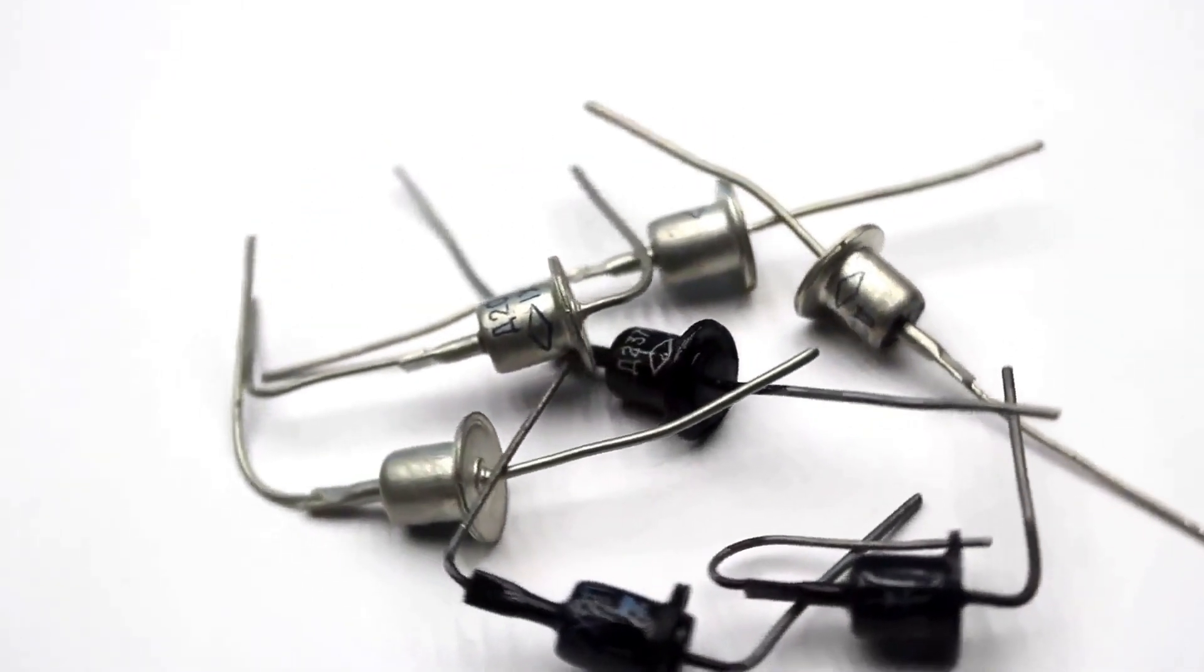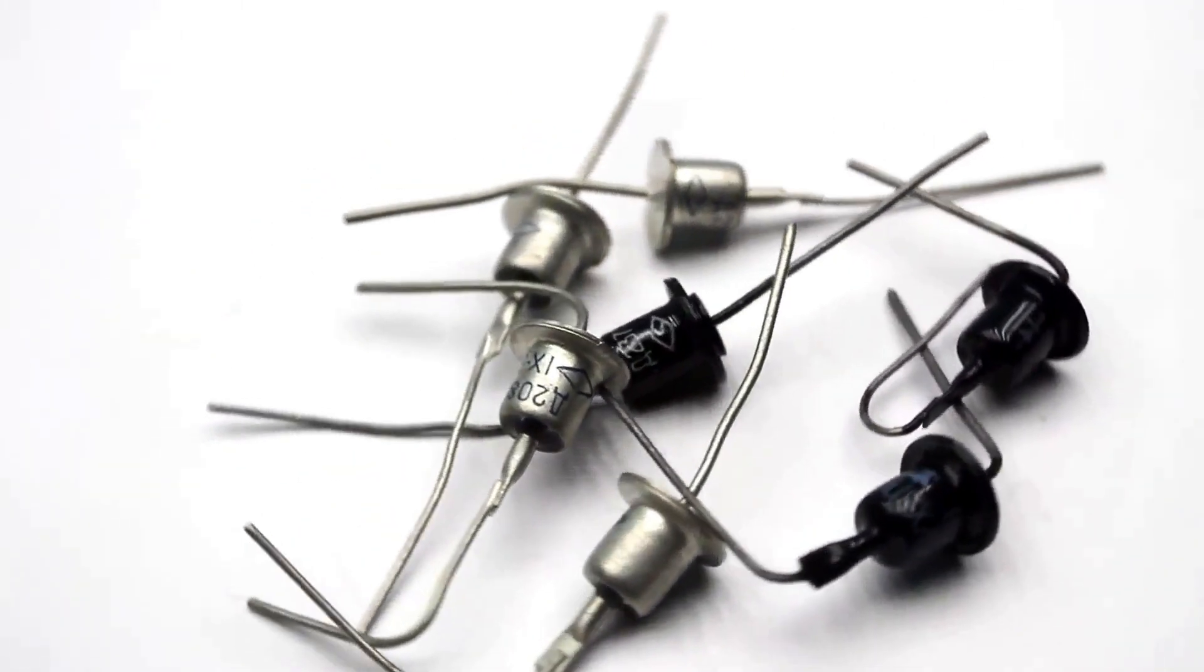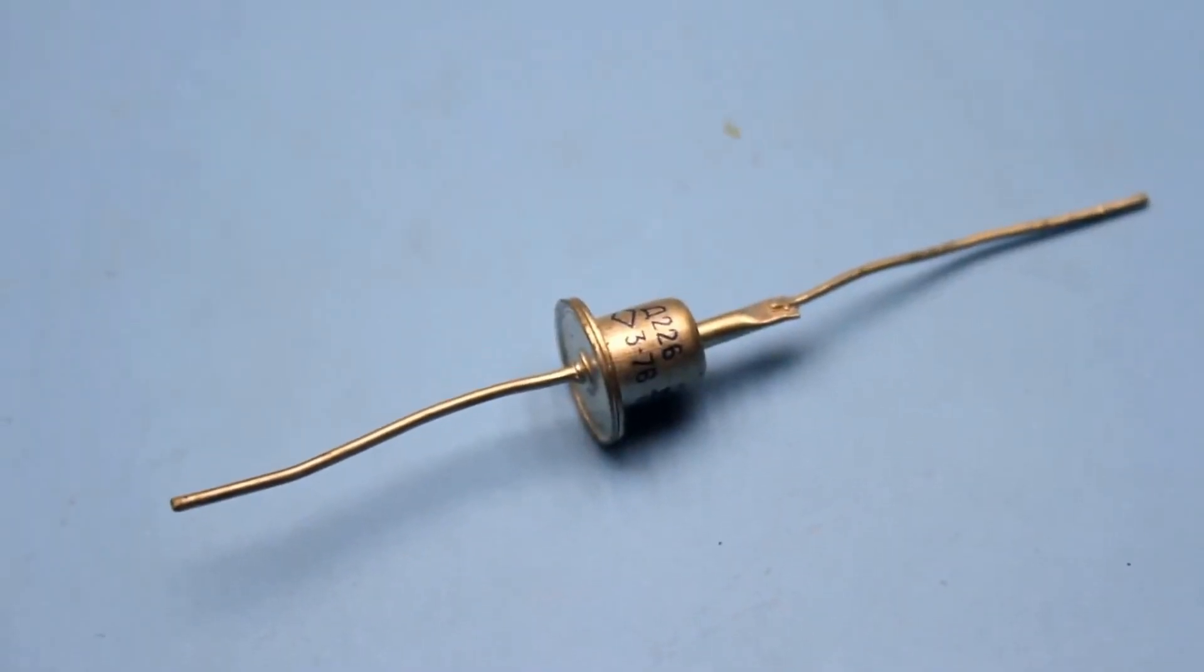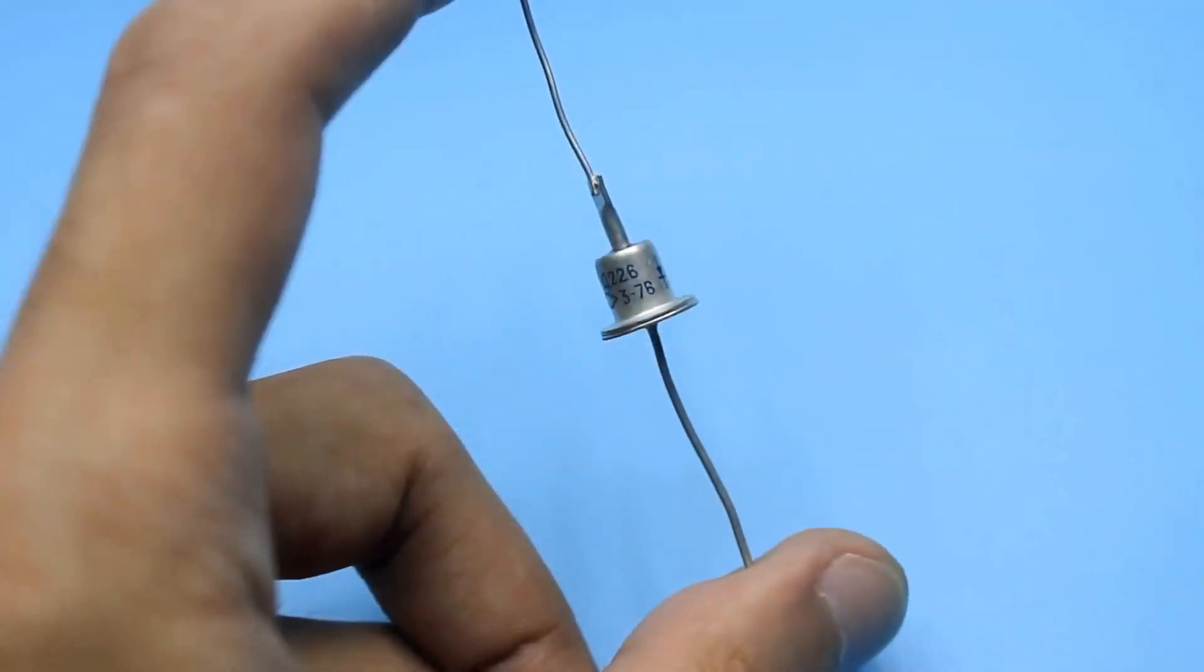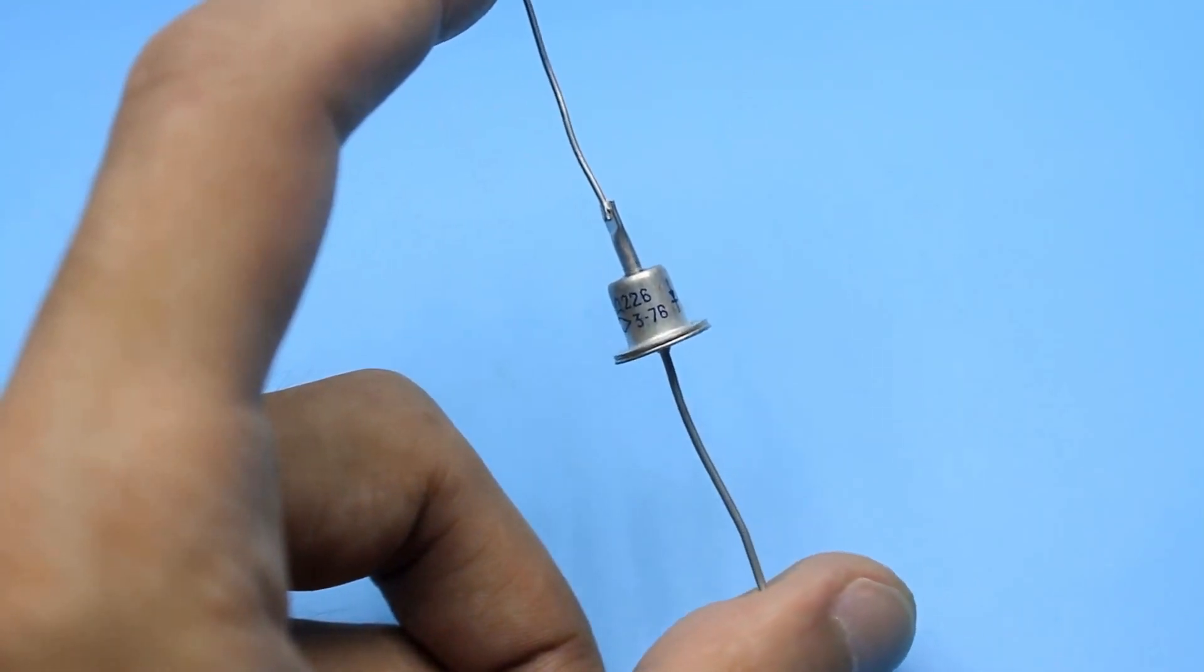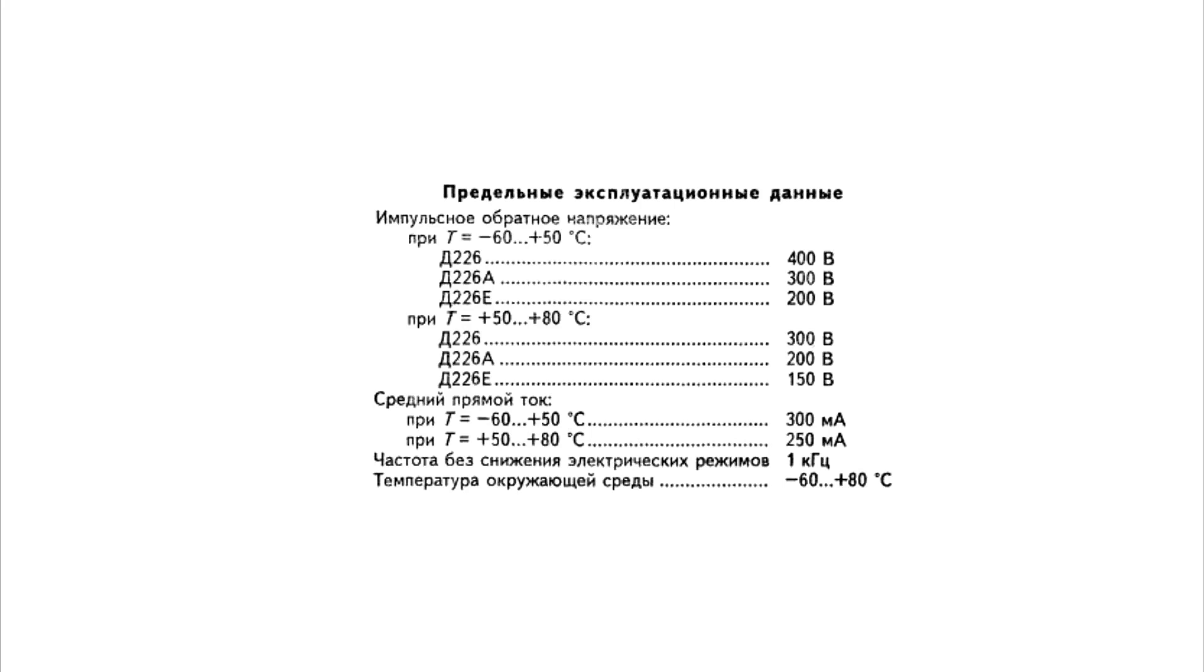In front of you is one of the most popular low-power diodes, the D226. This is a silicon rectifier diode. They were produced only in a metal casing and only in this form factor. The reverse voltage of these diodes, depending on the index, could range from 100 to 400 volts. The diodes were rated for a current of 300 milliamps.